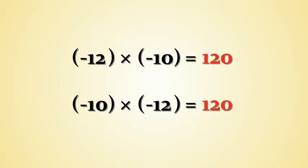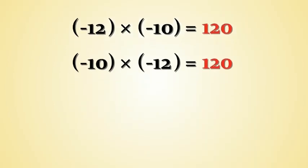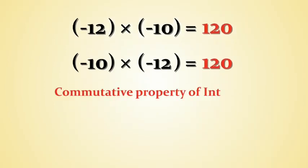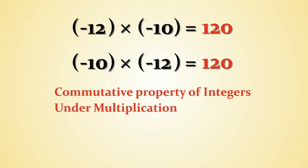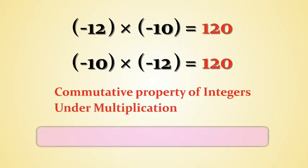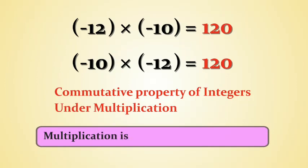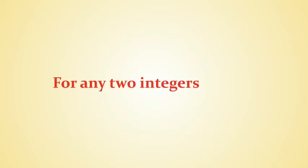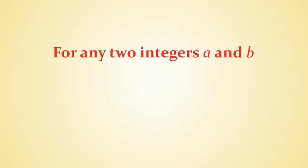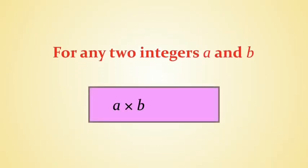We notice that in both cases the answer is the same, even when we change the order of the numbers being multiplied. This is the commutative property of integers under multiplication. Hence, multiplication is commutative for integers. In general, for any two integers a and b, we can say that a into b is equal to b into a.